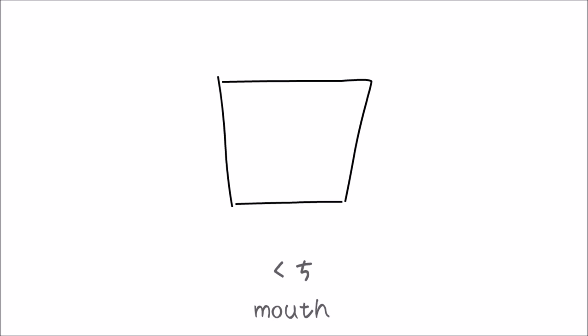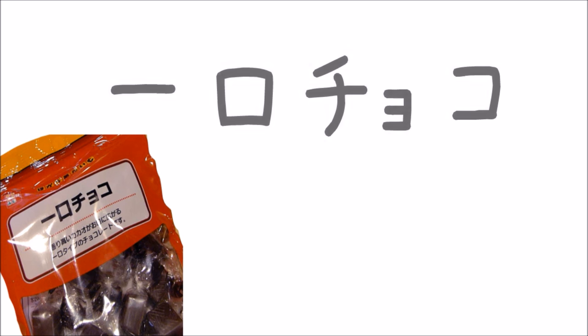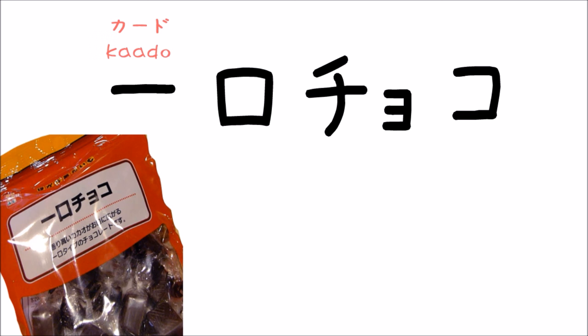Next, we have the kanji for mouth. It's one of the easiest kanji as you just need to draw a box. The kunyomi is kuchi. Do you remember what the katakana ro looks like? It looks basically the same. When I was a child and saw this package, I didn't think the second character was the kanji mouth, but the katakana ro. It was especially confusing because choko is written in katakana, and I thought the first character was the long vowel sign, so I was trying to read it like ro chokko or something.